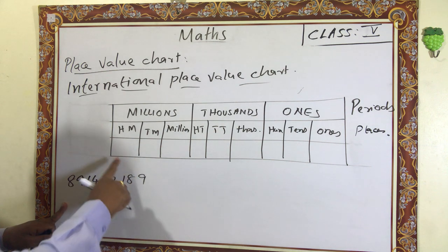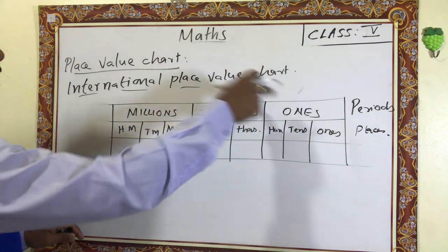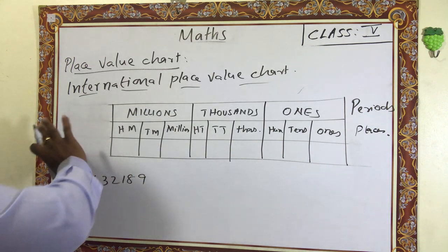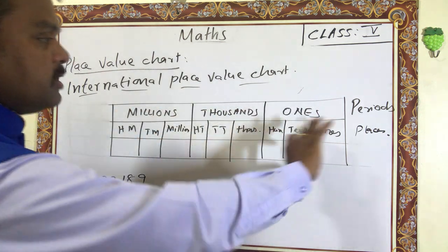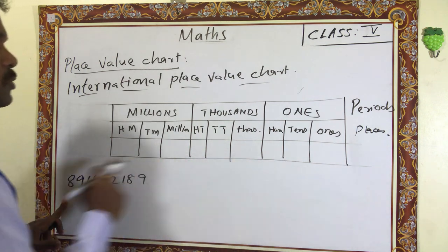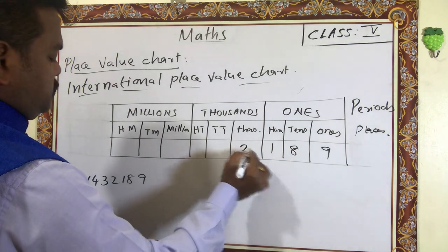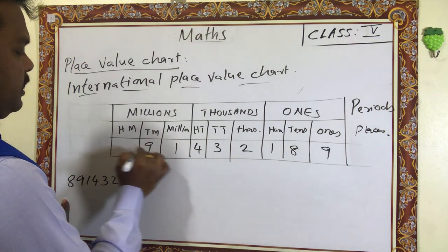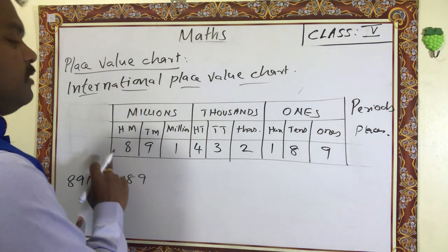If it is a nine-digit number, you make nine columns. If it is a seven-digit number, make seven columns. This makes it very easy to write the numbers correctly. If you are making all columns from millions to ones, you have to write the numbers from right side to left side. So: nine, eight, one, two, three, four, one, nine, eight — written from right to left.